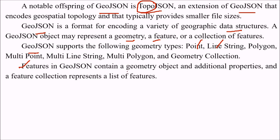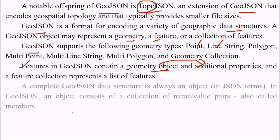Features in GeoJSON contain a geometry object and additional parameters or properties, and a feature collection represents a list of features.